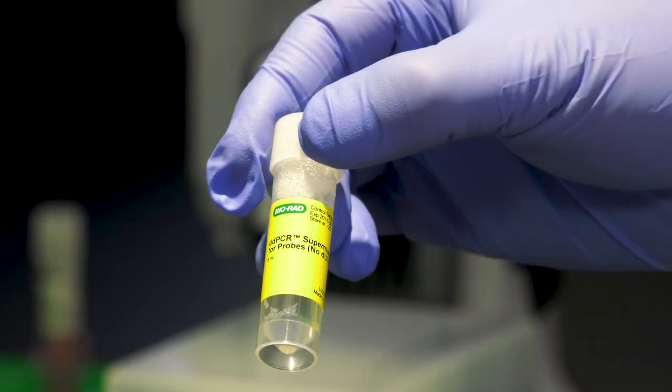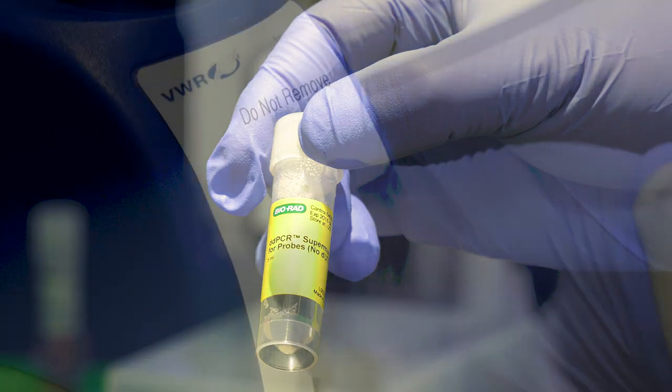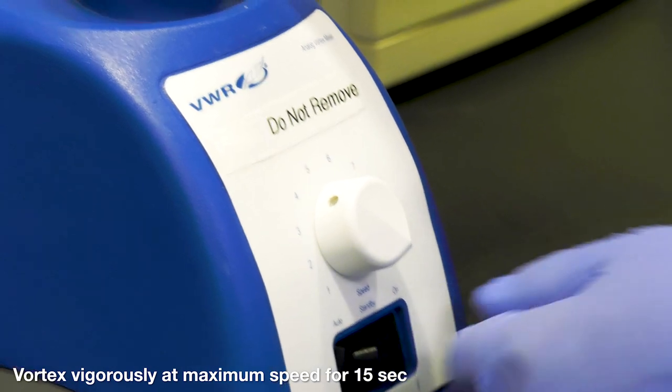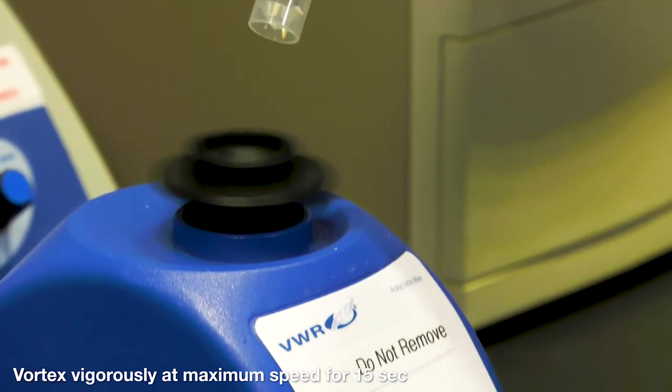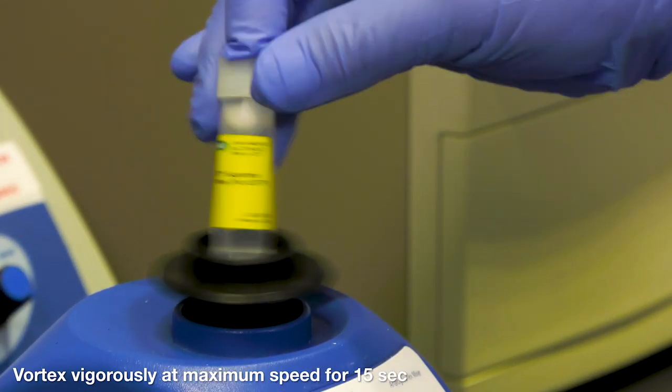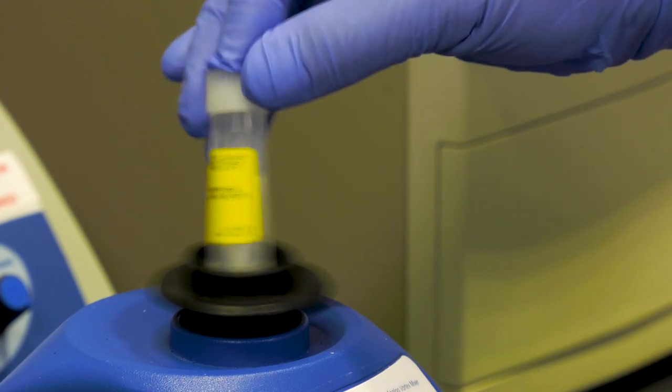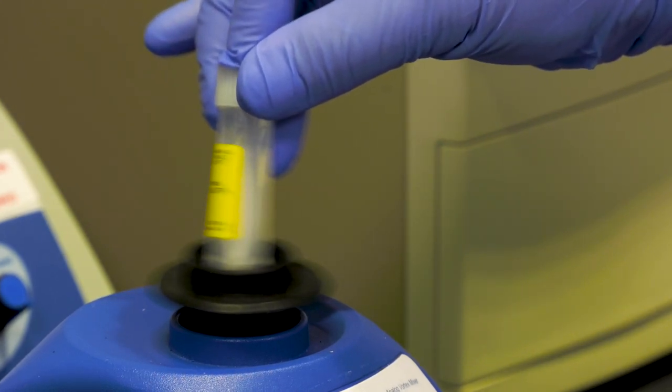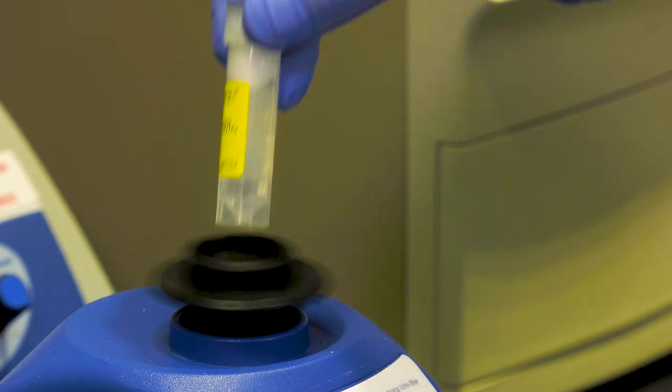Once the SuperMix is thawed completely, you may notice some precipitate at the bottom of the tube. In order to eliminate any separation or gradient, vortex the SuperMix at maximum speed, which is 3200 to 3500 RPM, for 15 seconds. Make sure any precipitate goes back into solution. The SuperMix can handle vigorous vortexing without damaging it.